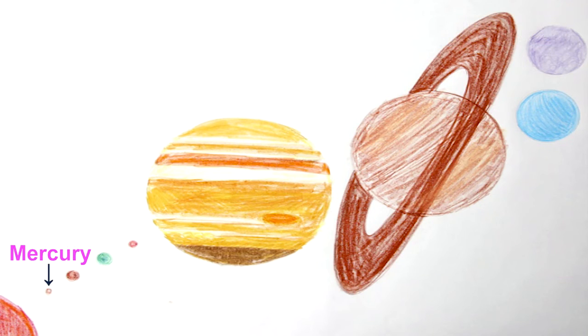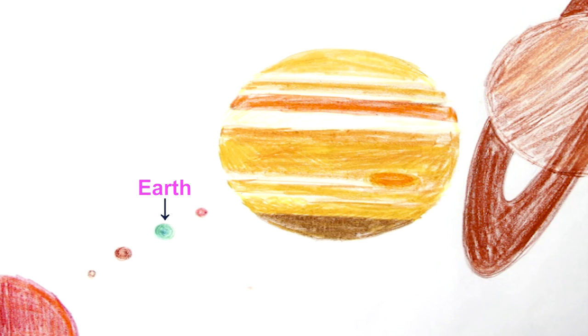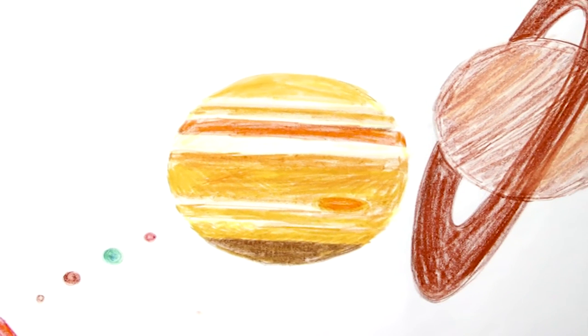Mercury, Venus, Earth, Mars, Jupiter, Saturn, Uranus, and Neptune. Looking at this chart, it seems that our Earth is not really that big of a planet.